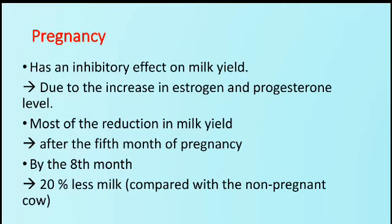The next factor is pregnancy. It has an inhibitory effect on milk yield due to the increase in estrogen and progesterone levels. Most of the reduction in milk occurs after the fifth month of pregnancy, and by the eighth month, there is 20% less milk compared with a non-pregnant cow.